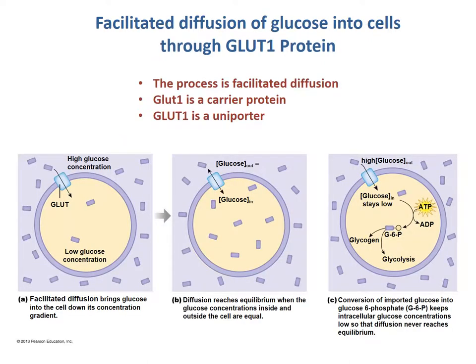Looking at examples of each type of carrier protein, we'll start with the uniporter. Uniporters are carrier proteins that only permit the movement of one kind of specific molecule. The example here is GLUT1, a specialized uniporter that only moves glucose. Here we can see the uniporter allowing glucose molecules to move from the extracellular fluid to the intracellular fluid, guided by facilitated diffusion — going from a high concentration of glucose on the outside to a lower concentration on the inside.